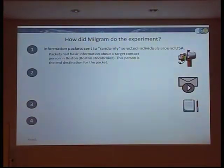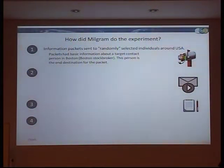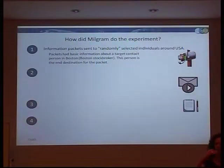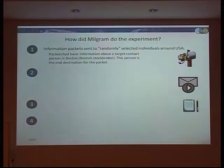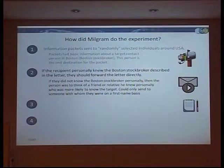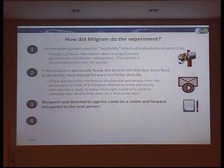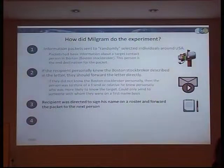He did this experiment where he sent packets to randomly selected individuals around the United States, and the packet had information saying: I want this packet to go to a stockbroker in Boston. If you know the stockbroker, send it straight to him. If you don't know the stockbroker, send it to someone who you think might know him or be closer to knowing this person. The recipient of the packet basically put his name on a piece of paper to record that he received it and sent it on.